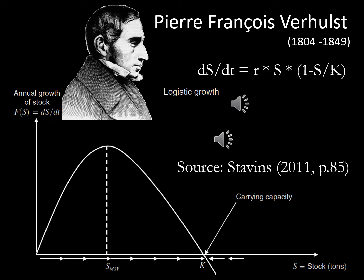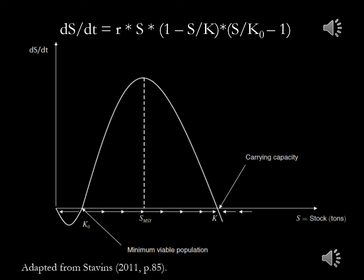One can consider this a model for human population growth as well as for other species. For example, this type of population model is often used in bioeconomics to determine optimal harvest of fish. Note that slightly more advanced models would also introduce a minimum viable population. This would add a term (s over k₀ minus 1) to the previous equation, where k₀ refers to the minimum viable population and captures the idea that it becomes more difficult to find mates for an increasingly small population.